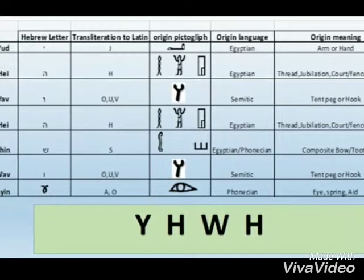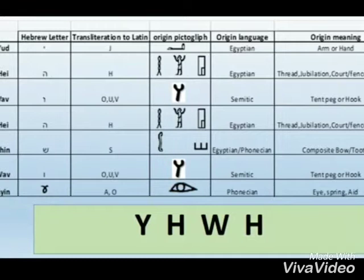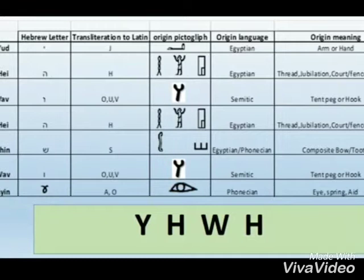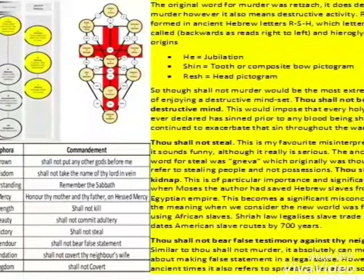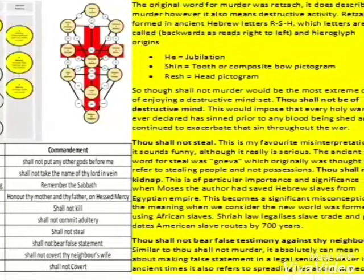In episode 1 we looked at the tetraformation of God's name and the pictoglyphic meanings from the hieroglyphs in the original language that is written within. In episode 2 we associated the Ten Commandments with the Kabbalistic Tree of Life and showed what the menorah really looked like. Some of the Ten Commandments we take for granted as if we know what they mean and it's written in stone.